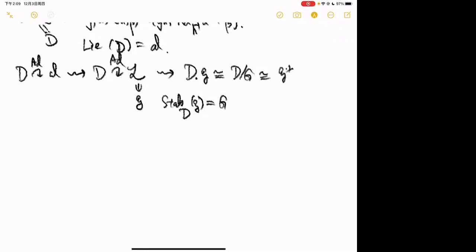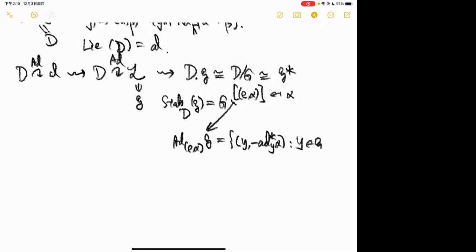Therefore the D-orbit through the point g can be identified with D/G, which can be identified with G*. The element α goes to the class of (e, α), and the corresponding Lagrangian subalgebra is the graph of the coadjoint action of α on g, which consists of all pairs (y, −coad(y)(α)) for y in g.